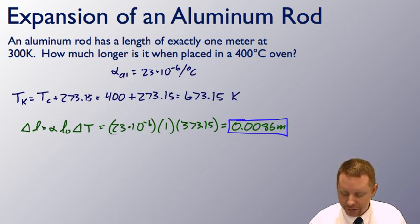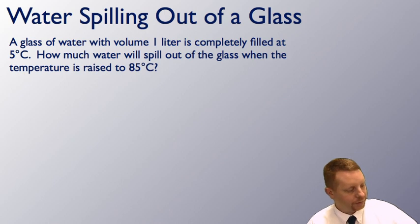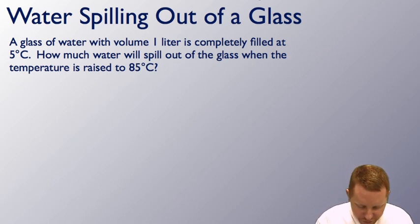Let's take a look at one that has volumetric expansion. If we have water spilling out of a glass, a glass of water with volume 1 liter is completely filled at 5 degrees C. How much water will spill out of the glass when the temperature is raised to 85 degrees C? Here we need to recognize that both the glass and the water will expand. If we calculate how much each of those expands, the difference in those should be the amount that the water spills out.